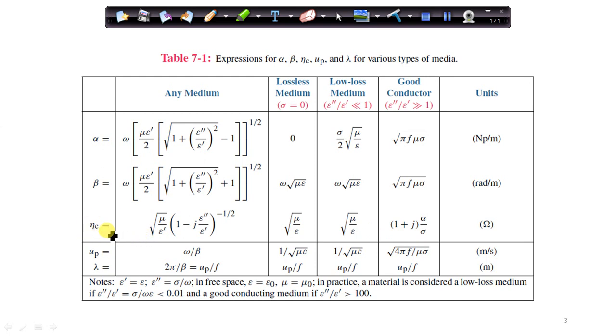So since we use eta, the intrinsic impedance of the material, to relate the electric field to the magnetic field, if it's complex, there's going to be a phase shift between the electric and magnetic field.